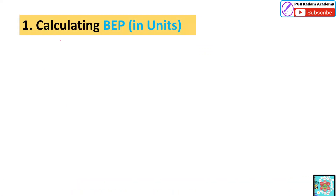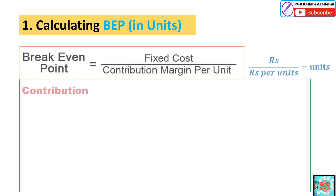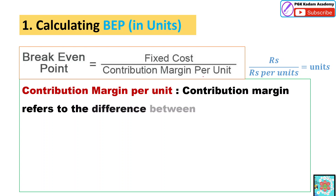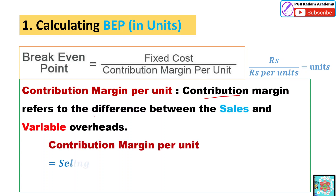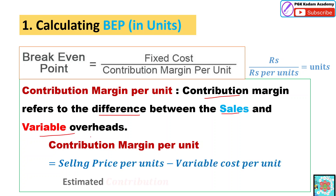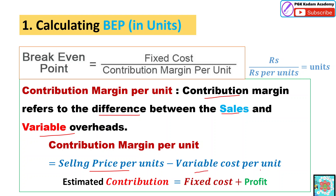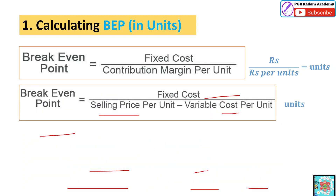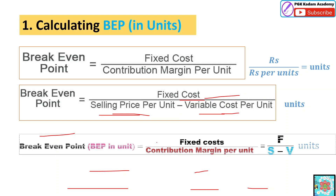First, we go for the BEP, which means break-even point in units. We can calculate it using the formula: fixed cost upon contribution margin per unit. Contribution margin is the difference between the sales and the variable overheads — calculated as selling price per unit minus variable cost per unit. Also, estimated contribution is equal to fixed cost plus profit. The BEP in units can also be written as F upon S minus V.